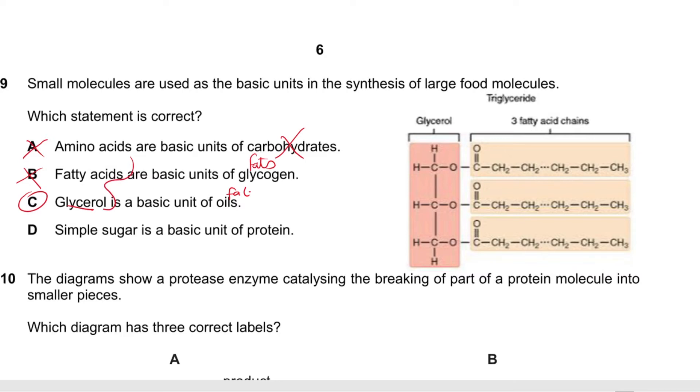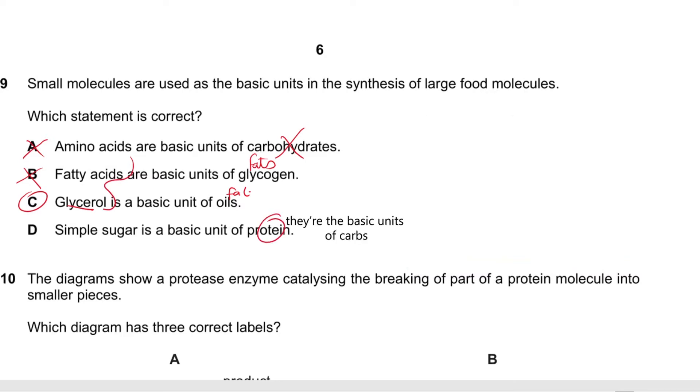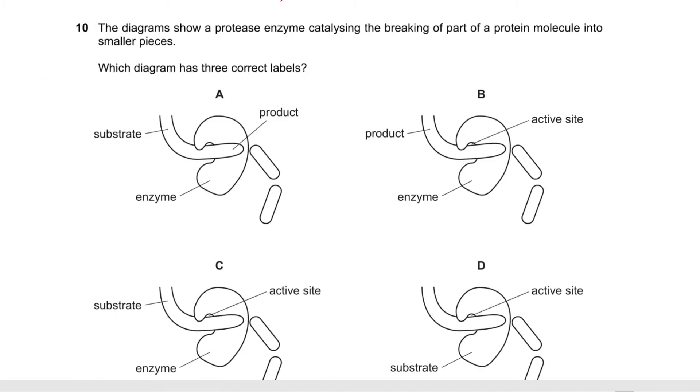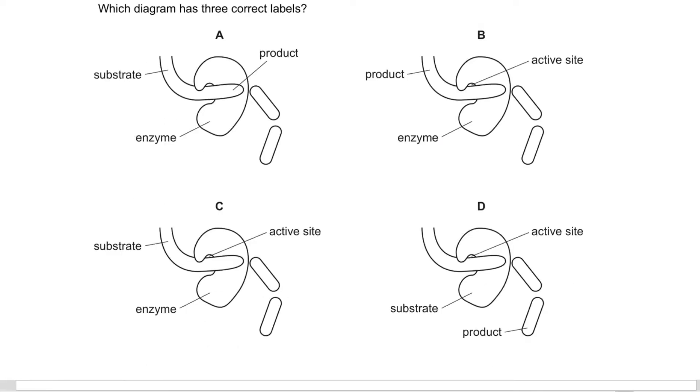Question number 10 says the diagram shows a protease enzyme catalyzing the breaking of part of a protein molecule into smaller pieces. Which diagram has three correct labels? Obviously this is the enzyme, yes, that is not the product, it's not broken down. Enzyme, yes, that is the active site. That's not the product, that's the substrate because the product is right here after it's broken down. This is the active site, I say yes. That's the enzyme, yes, so C. This is the product, not substrate.